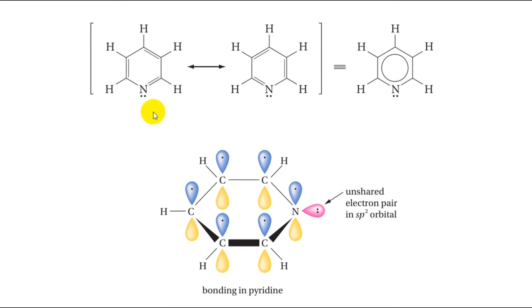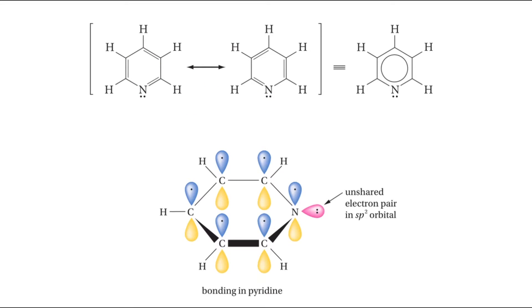Pyridine has a structure similar to benzene except that one CH unit is replaced by a nitrogen atom. Like benzene, pyridine is a resonance hybrid of Kekulé-type structures. The orbital picture for pyridine is similar to benzene: the nitrogen atom, like the carbons, is sp2 hybridized with one electron in a p-orbital perpendicular to the ring plane. The nitrogen contributes one electron to the six electrons forming the aromatic pi cloud above and below the ring plane.